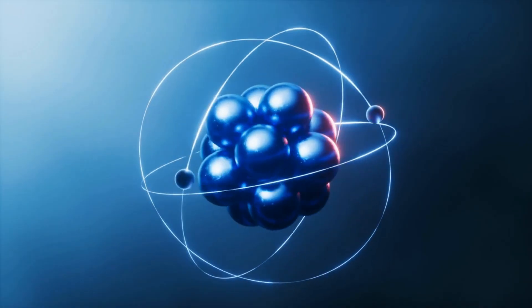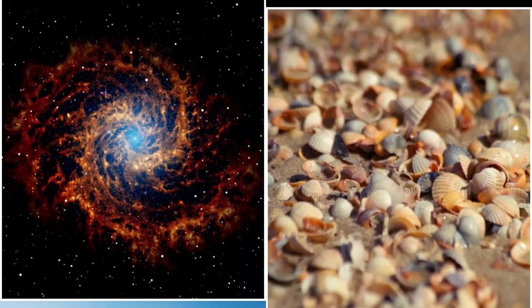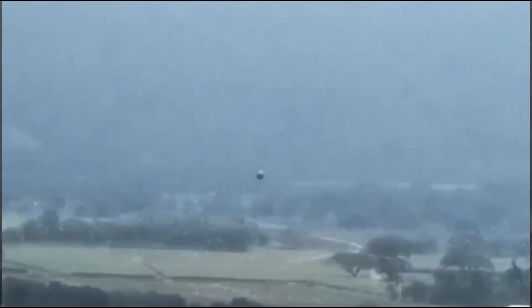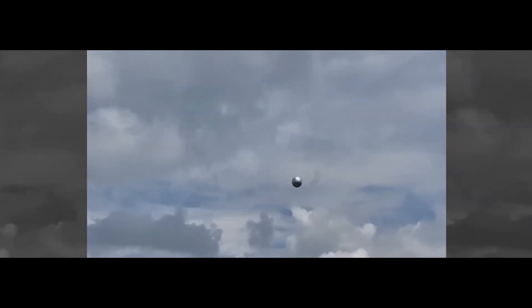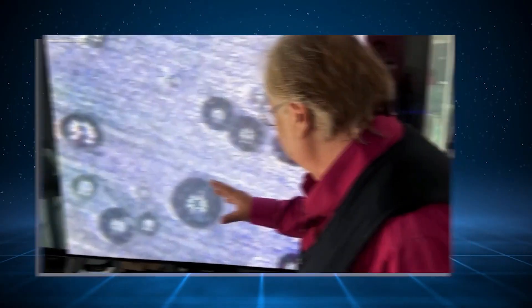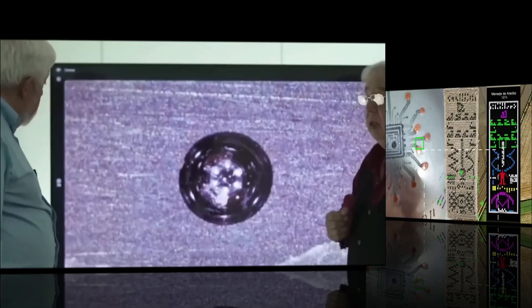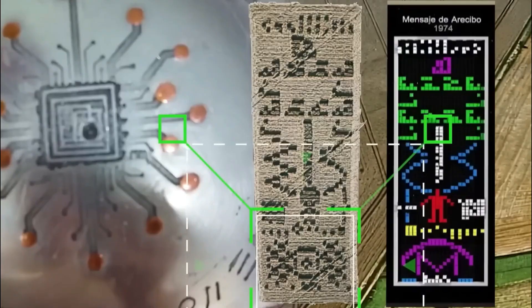They matched the fundamental constants of nature. The fine structure constant that binds electrons to atoms. The golden ratio that shows up in galaxies and seashells. The kind of blueprints you don't expect to find carved into a sphere that fell out of a cloudless Colombian sky. Whoever made this object understands reality at a layer we're only beginning to approach.